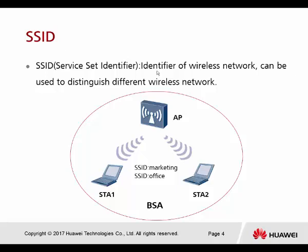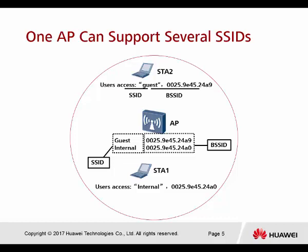We can assume SSID is one of the names for the wireless access. For one AP, we can create different names for wireless access. All the users here — the STA, which stands for station — can choose which SSID they're going to connect to. One AP can support several SSIDs, meaning one AP is not only able to broadcast one SSID; we are allowed to create multiple SSIDs in one AP. Every single SSID will be together with one BSSID, which in another word we can call the MAC address of the AP.